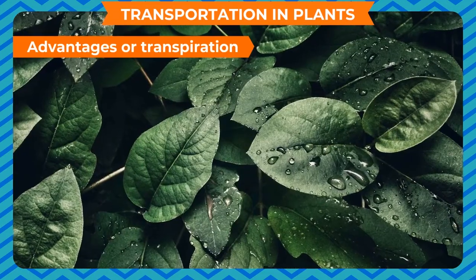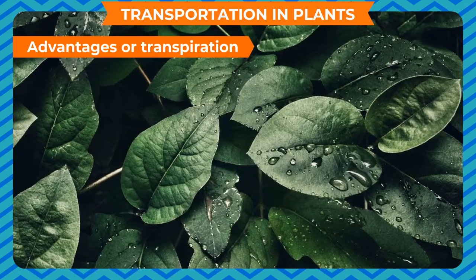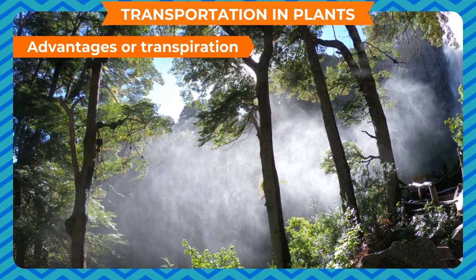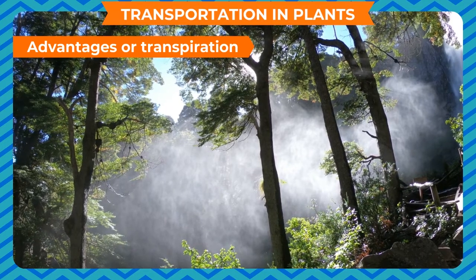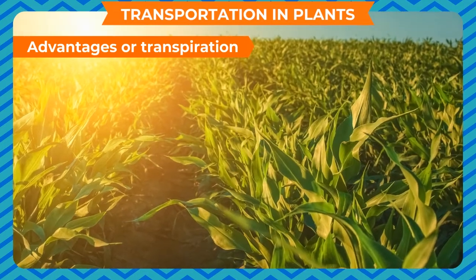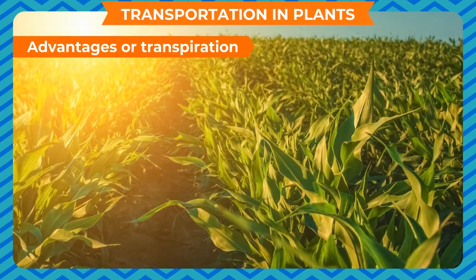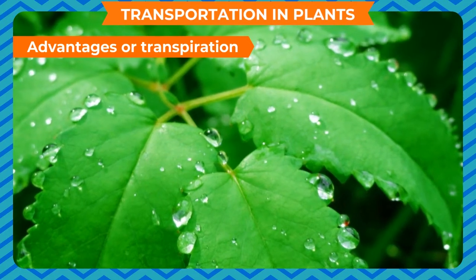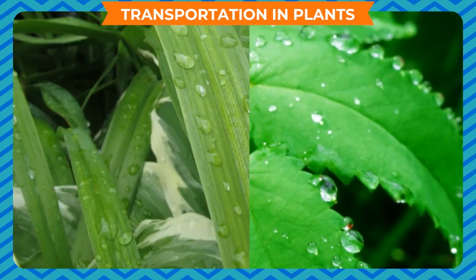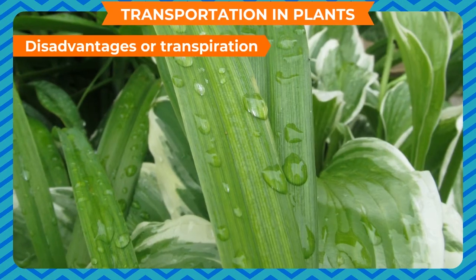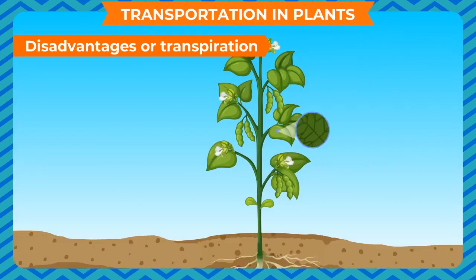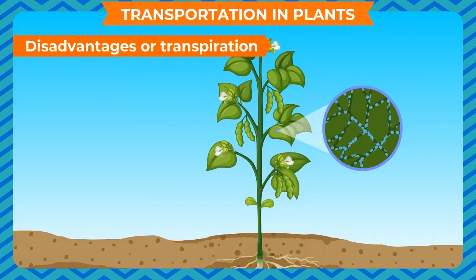Advantages of Transpiration: It helps in evaporating excess water from the plant. It controls the body temperature of the plant. It helps in the upward conduction of water and minerals. Disadvantages of Transpiration: It increases loss of water.